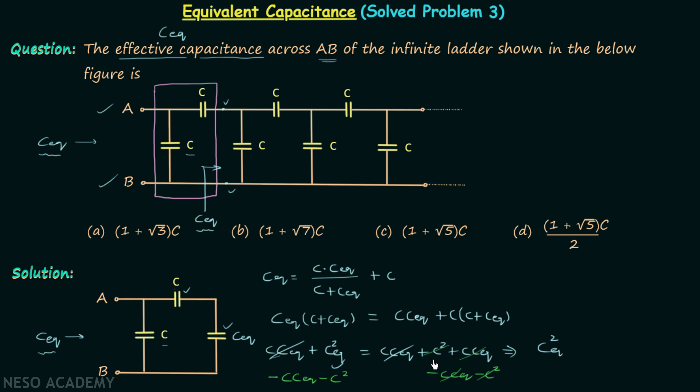This and this will cancel out, and therefore on the right-hand side we have 0, and on the left-hand side we have C_eq squared minus C multiplied to C_eq minus C squared. So we have one quadratic equation and we can solve it easily.